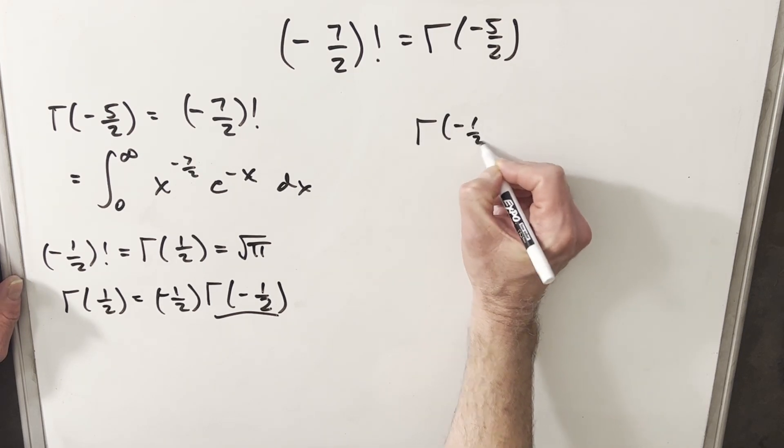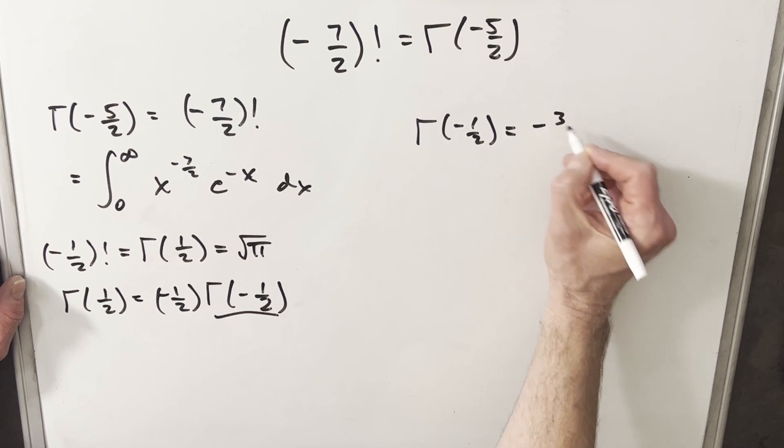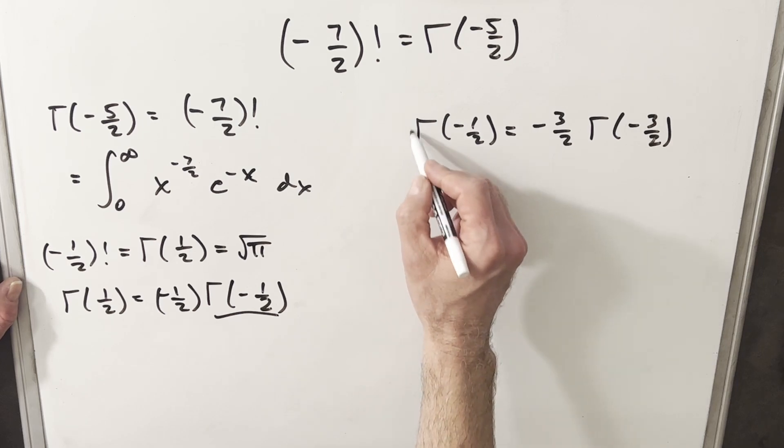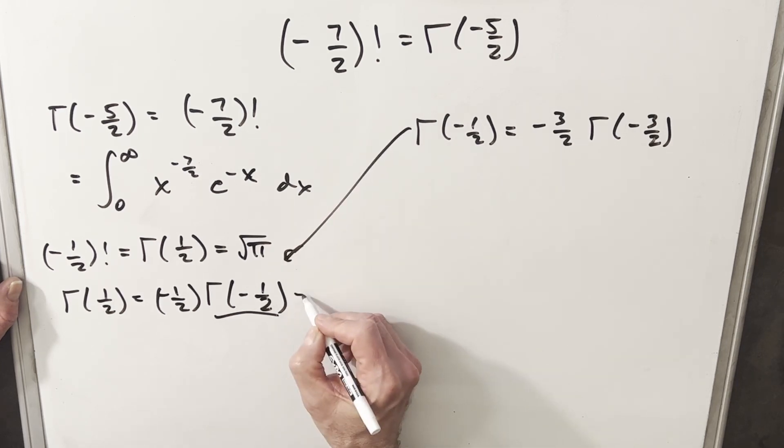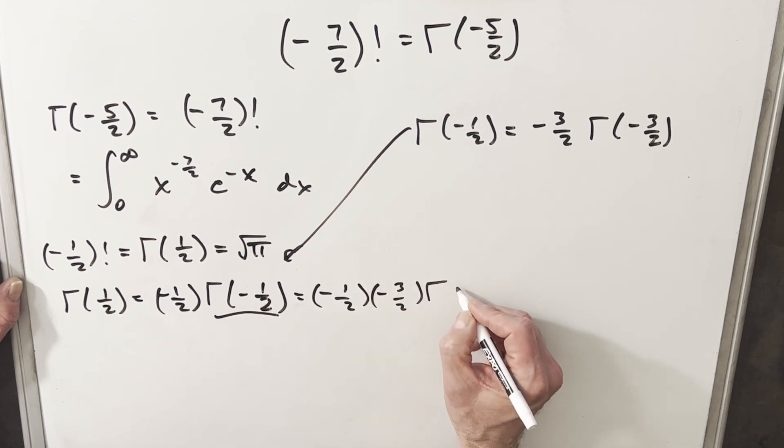Well, gamma of minus one half, using the exact same formula, we subtract one from this, this is the same thing as minus three halves times gamma of minus three halves. So then let's plug that back in here and see what we have. We're going to have minus one half times minus three halves times the gamma of minus three halves.